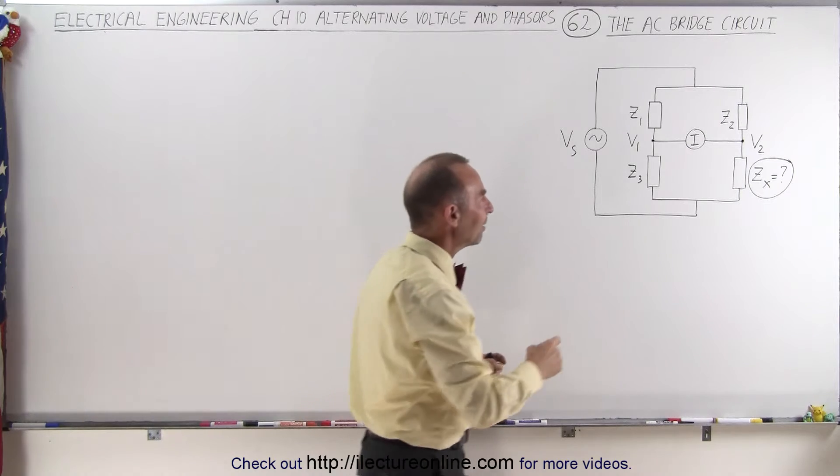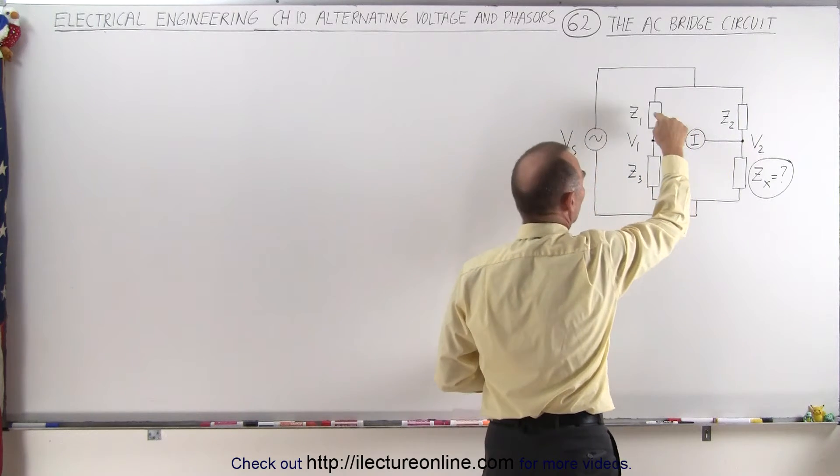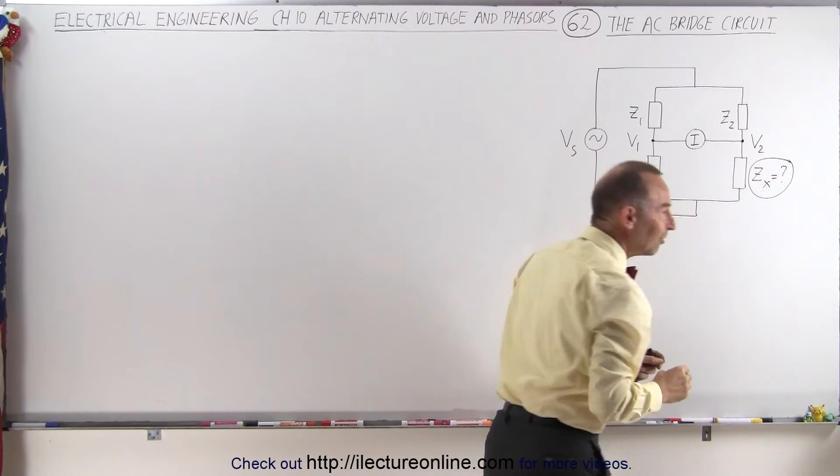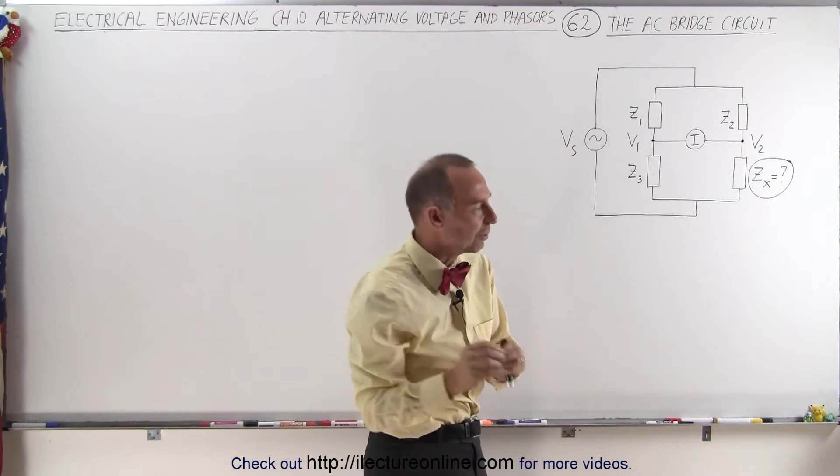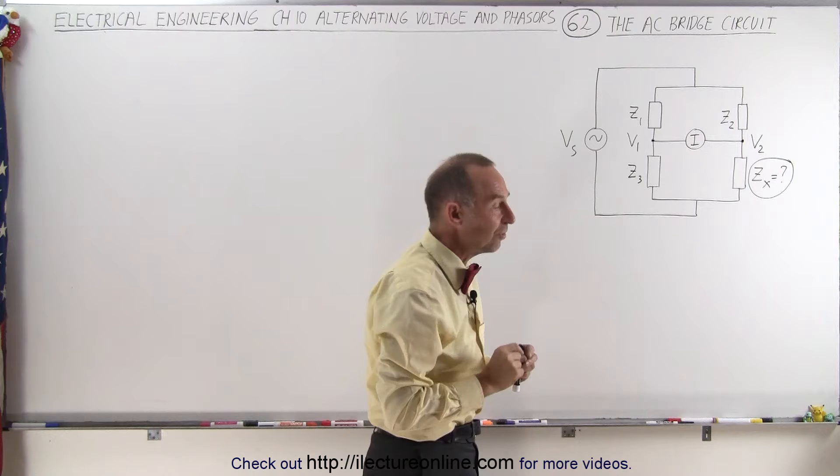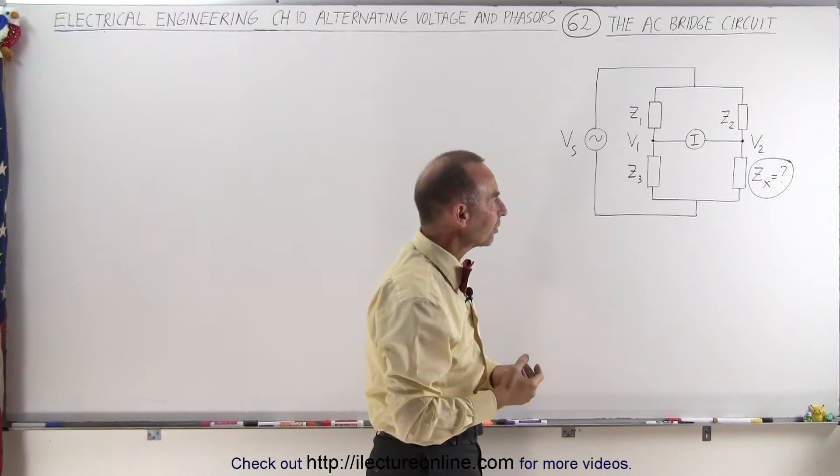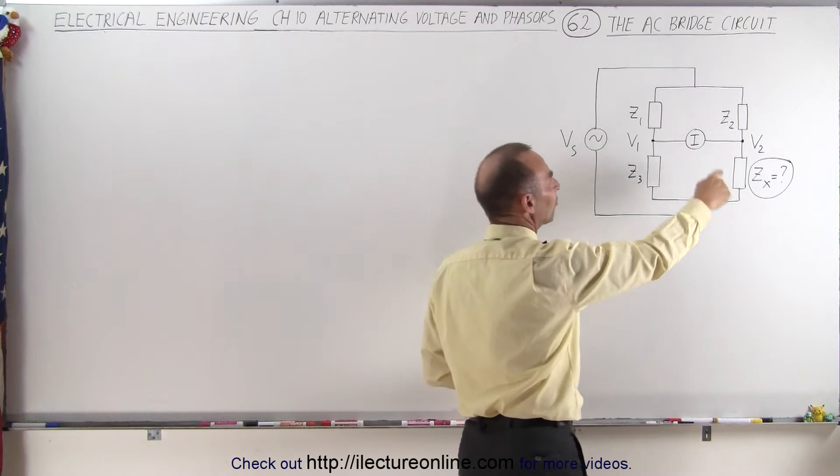The idea is that if three impedances are known—Z1, Z2, and Z3—and the fourth impedance is unknown, we can very accurately measure that impedance using the bridge circuit. This is typically the reactance of a capacitor or inductor.